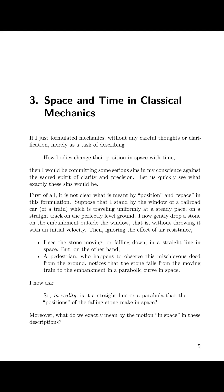Chapter 3: Space and Time in Classical Mechanics. If I just formulated mechanics without any careful thoughts or clarification, merely as a task of describing how bodies change their position in space with time, then I would be committing some serious sins in my conscience against the sacred spirit of clarity and precision. Let us quickly see what exactly these sins would be. First of all, it is not clear what is meant by position and space in this formulation. Suppose that I stand by the window of a railroad car, of a train, which is traveling uniformly at a steady pace on a straight track on the perfectly level ground. I now gently drop a stone on the embankment outside the window, that is, without throwing it with an initial velocity.